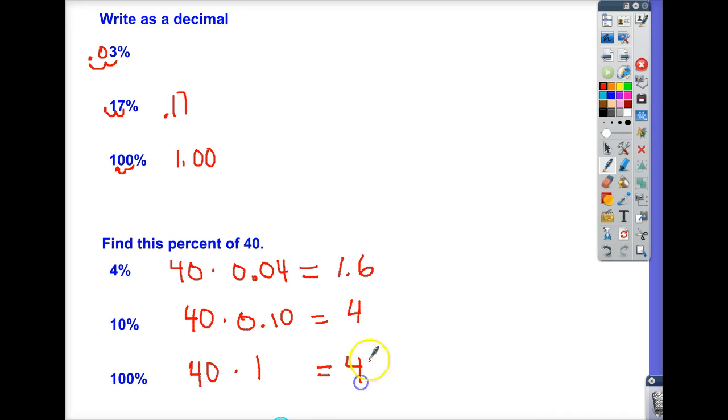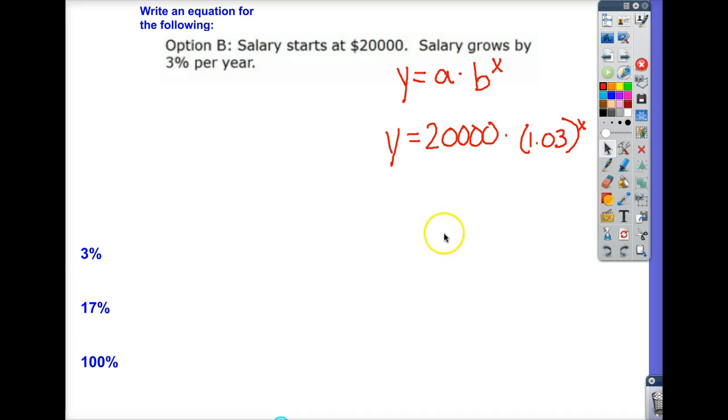100%, that's even easier because I'm just multiplying by 1. I know 100% is all of it, right? 100% is everything. It's just 40. It's not going to change. Same as multiplying by 1. So, looking back at this, why would I multiply by 1.03 instead of 0.03?